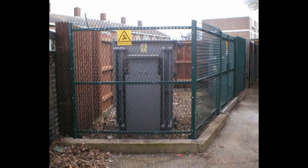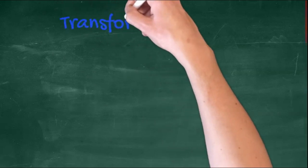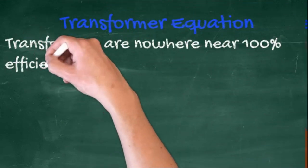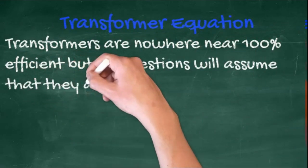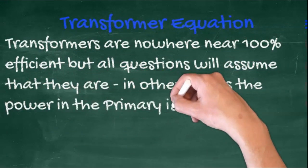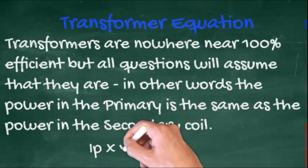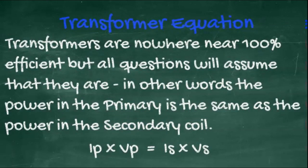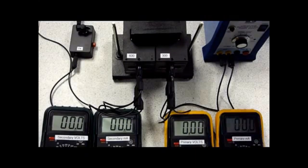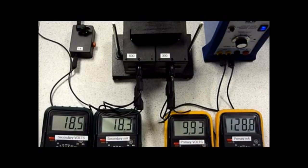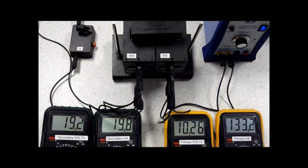This is a transformer in a local substation. Transformers are by no means 100% efficient, but all the questions you'll be asked will assume that they are. Basically, they will assume that the power into the primary will equal the power out at the secondary. Amps times volts in equals amps times volts out. And again, you may well have to rearrange and calculate.